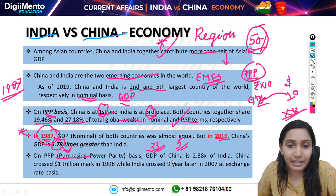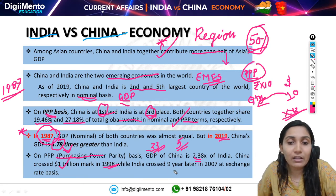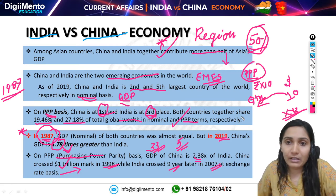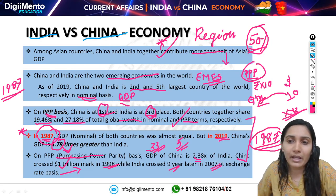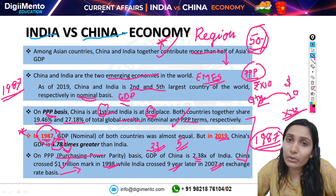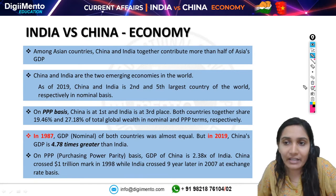On a purchasing power parity basis, China's GDP is 2.38 times that of India. China crossed the 1 trillion dollar mark in 1998, while India crossed it 9 years later in 2007 on an exchange rate basis. This highlights the factors responsible for China's growth and what held India back by comparison.